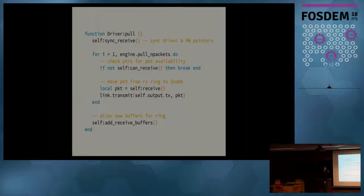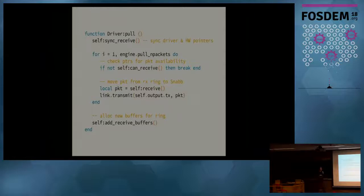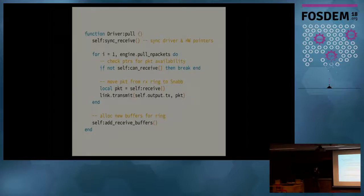Given that setup, we can write the main method that does the receive functionality for this driver — and it's just this code. It's slightly simplified for the slide but pretty similar to the actual code. This first line is the method declaration saying it's a pull method for the driver. The first thing we do is call sync_receive to synchronize the driver's copy of the pointers with the NIC's view of the pointers. Then there's a main loop iterating over the maximum number of packets that can go in an app link at once. On each iteration we check if packets are available in the ring descriptor; if not, we break out. If packets are available, we call the receive method to get the packet from the allocated buffer and send it to the next app in the graph. After the receive, we allocate new buffers to replace the ones we've read off the descriptor ring.